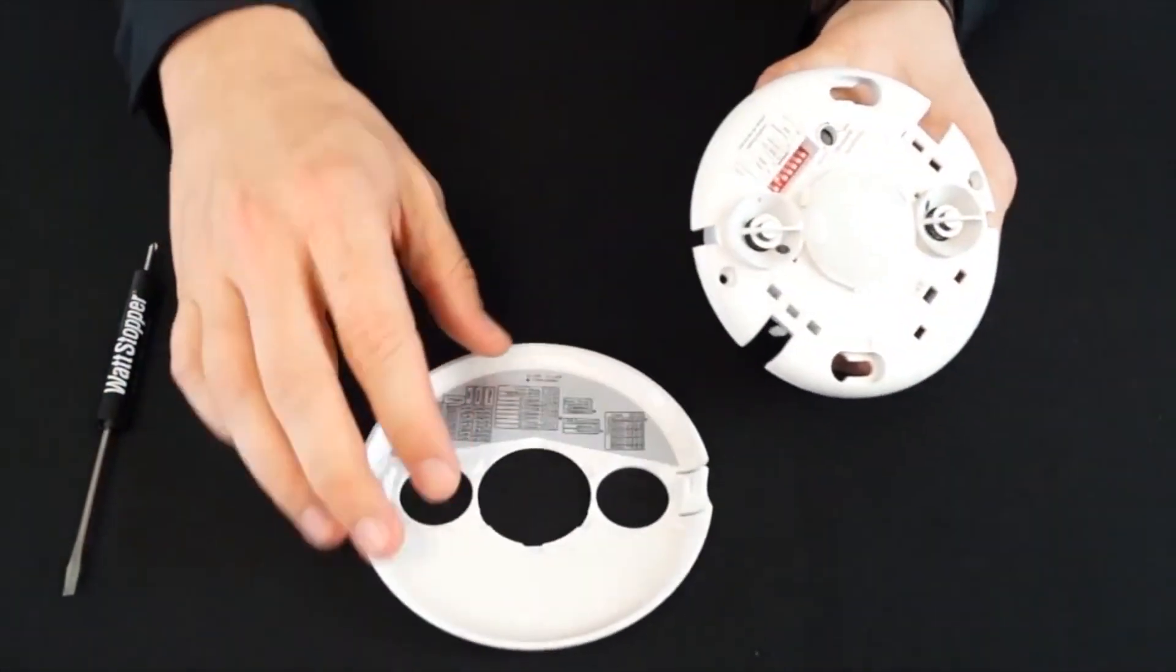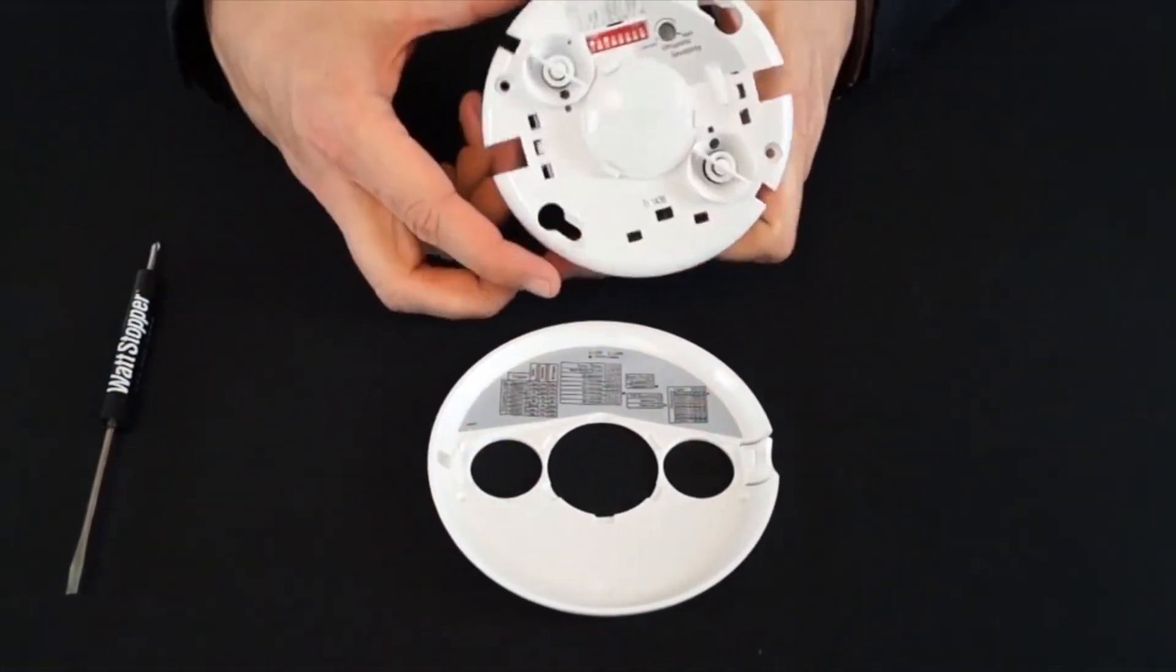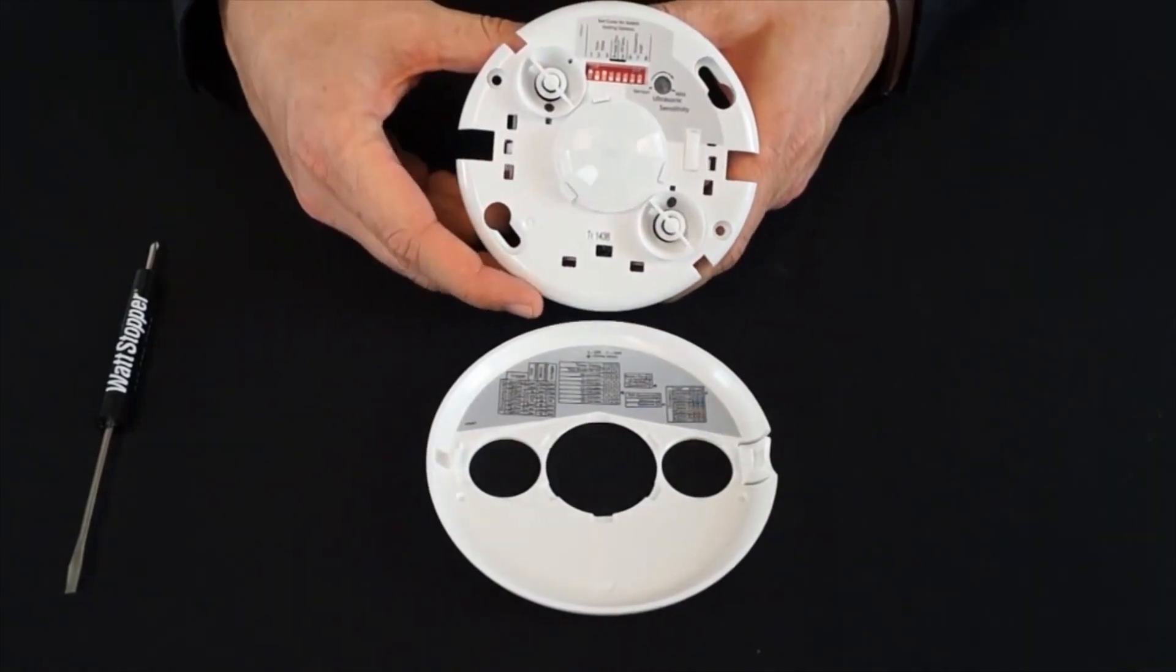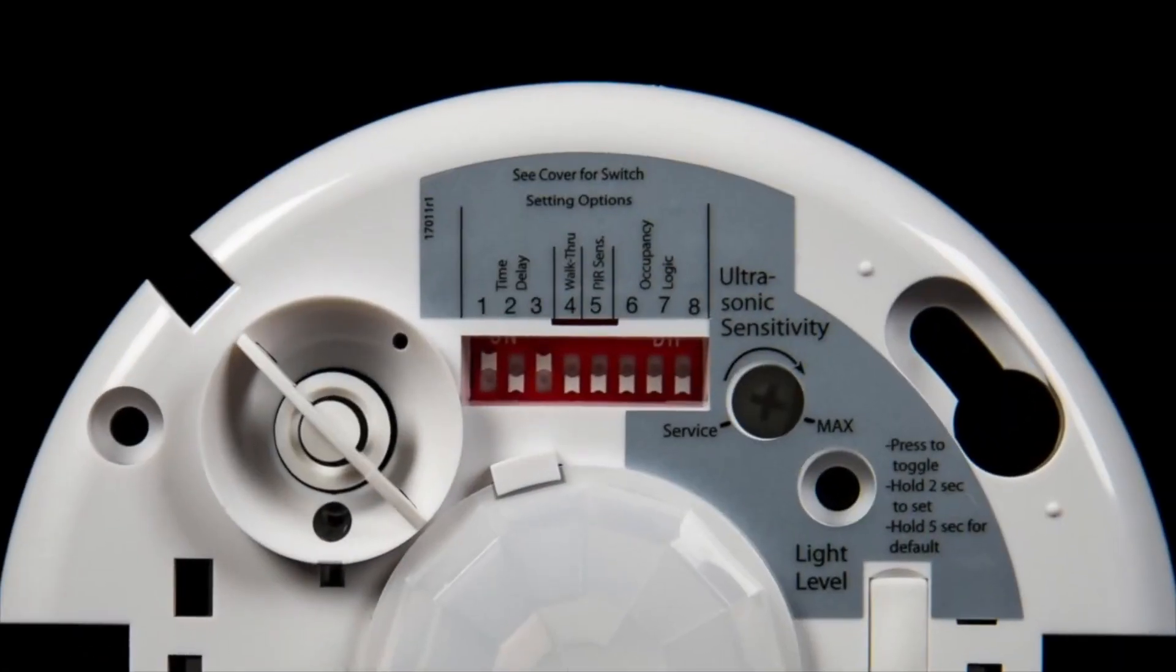You'll notice once removed the full set of adjustable set points behind the cover. The ultrasonic sensitivity trim pot will be visible just to the right of your dip switches.